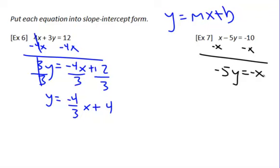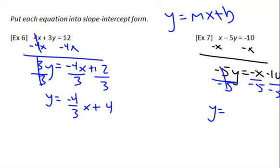So negative x minus 10. Now we've got to get rid of the negative 5 times y, so divide everything by negative 5. That cancels and we're left with y equals. Negative x over negative 5 is going to be positive — and there's actually a 1 in front of that x — so it's one-fifth x plus 2, because negative 10 divided by negative 5 is positive 2.